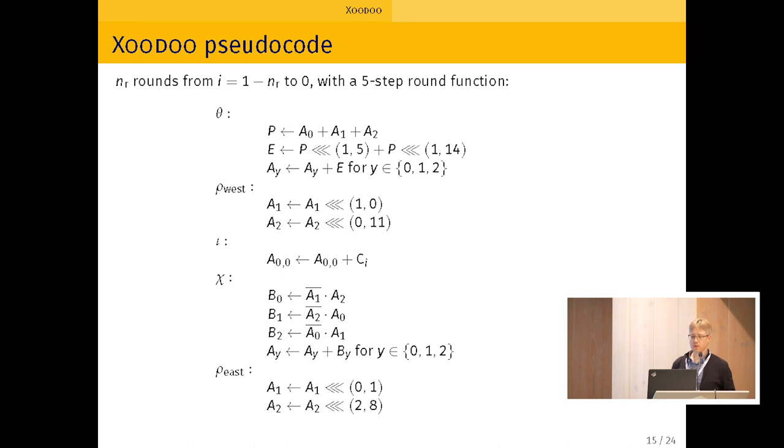So that's the pseudocode of Zoodoo. So first Theta computing the parity, having the two copies and then XORing them back. Rho West shifting the two planes. Iota round constants. Chi computing the products and then XORing them back. And then Rho East moving the two planes.